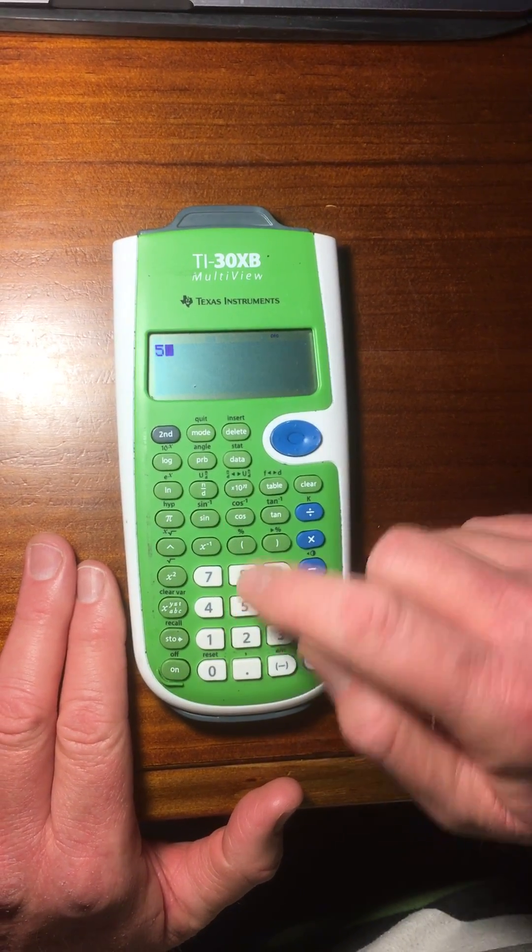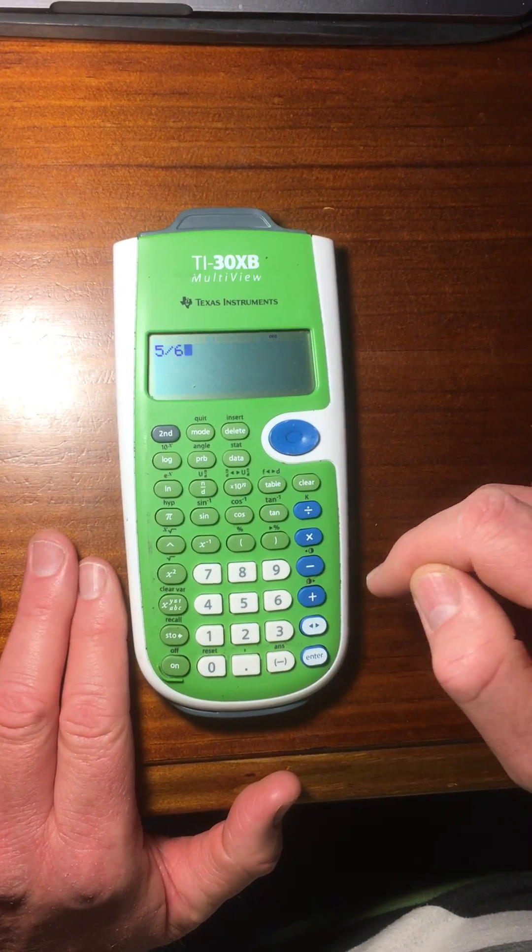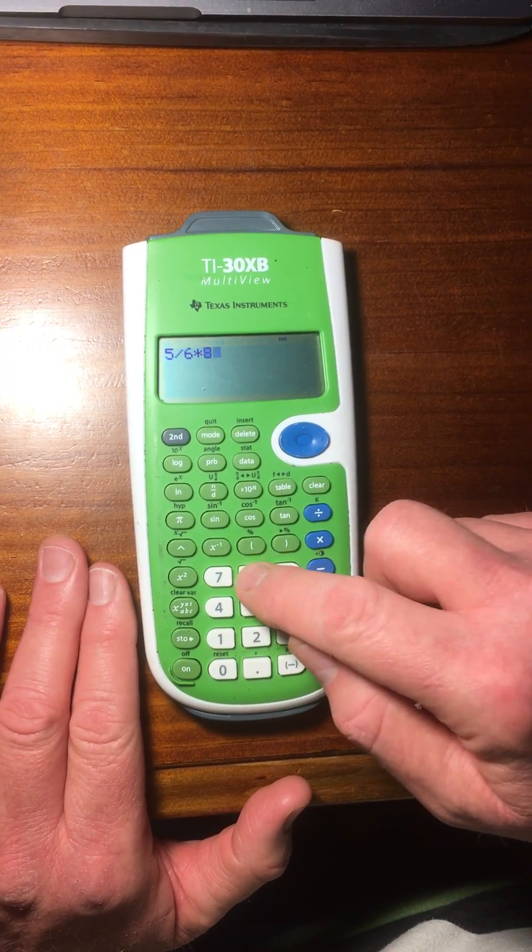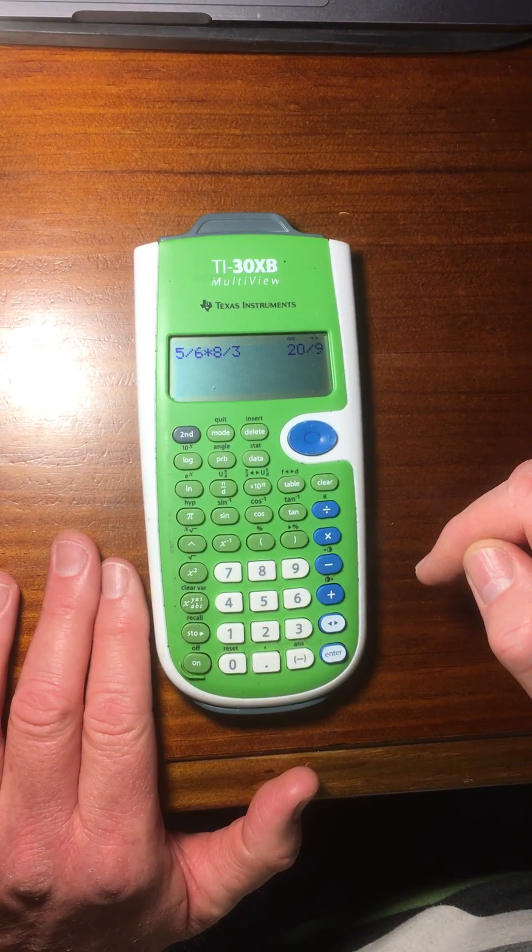Now, if I want to make a fraction, classic mode puts it as 5, 6. Like that. And then I can multiply by, let's go, 8 over 3. And I get my answer like that.